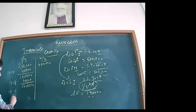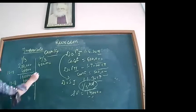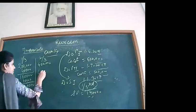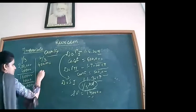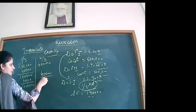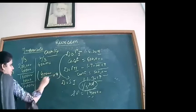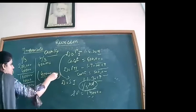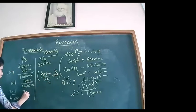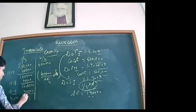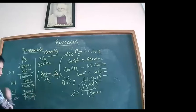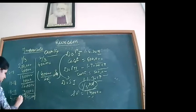Annual depreciation on one-third is: 20% × ₹2L = ₹40,000 for a full year. Reduced proportionately for 9 months: ₹40,000 × 9/12 = ₹30,000. After charging ₹30,000, the book value is ₹90,000.